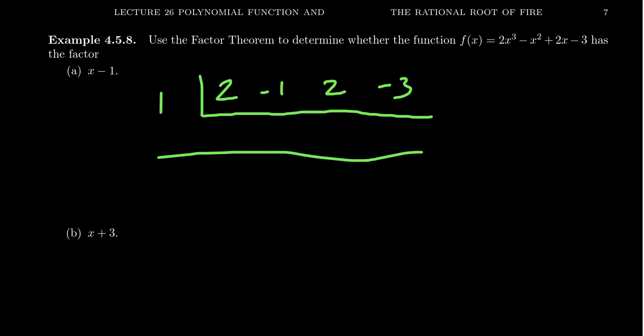So we're going to bring down the 2. 2 times 1 is 2. Minus 1 is 1. Times 1 is 1. Plus 2 is 3. Times 1 is 3. Minus 3 is 0. So this right here is our remainder. The remainder turned out to be 0. So this tells us that the polynomial is divisible by x minus 1.